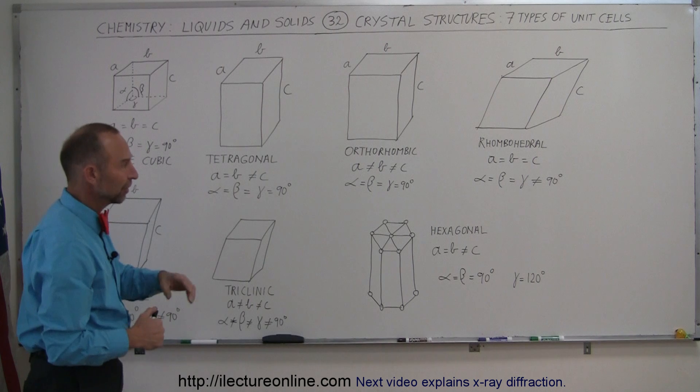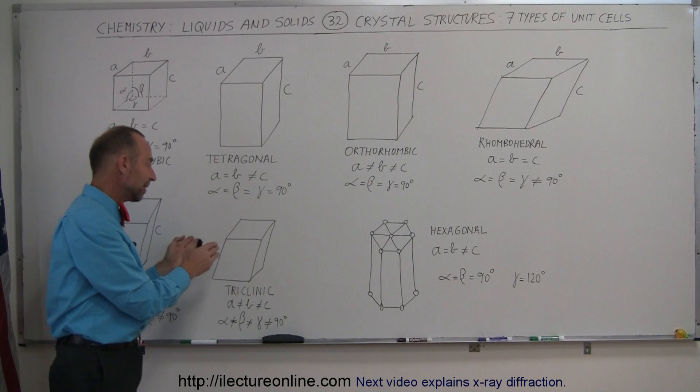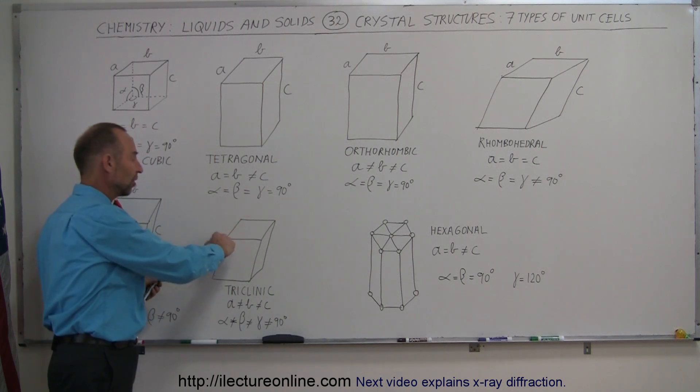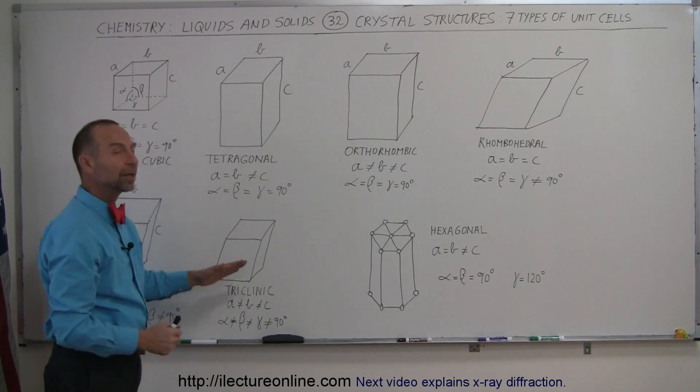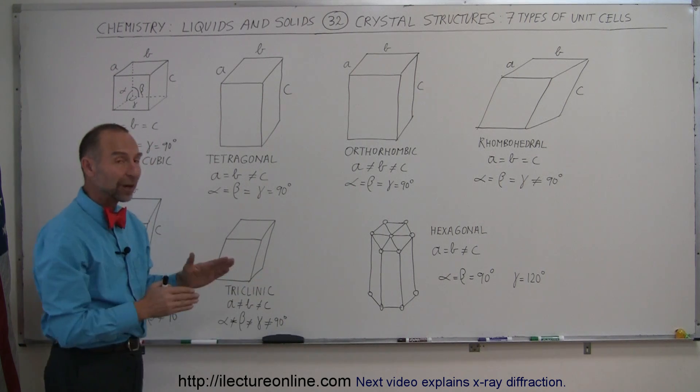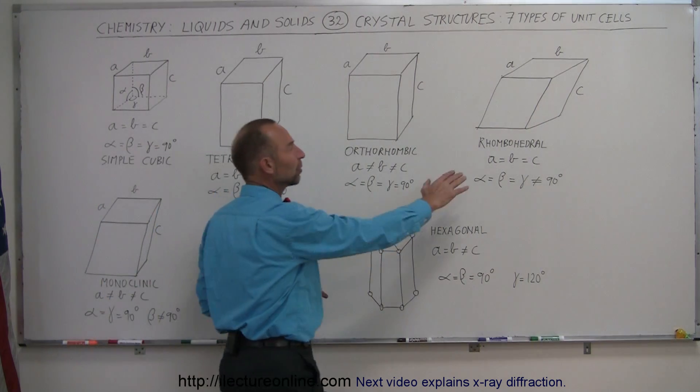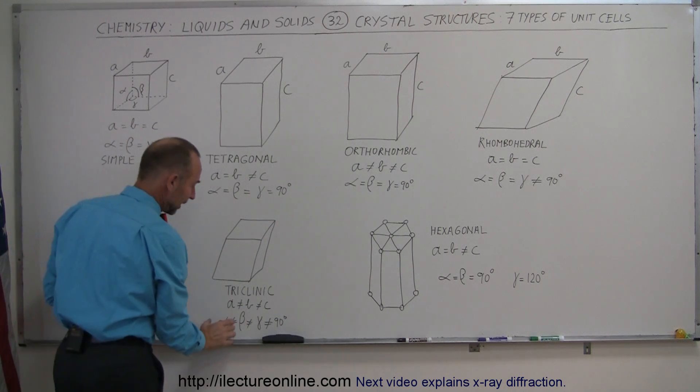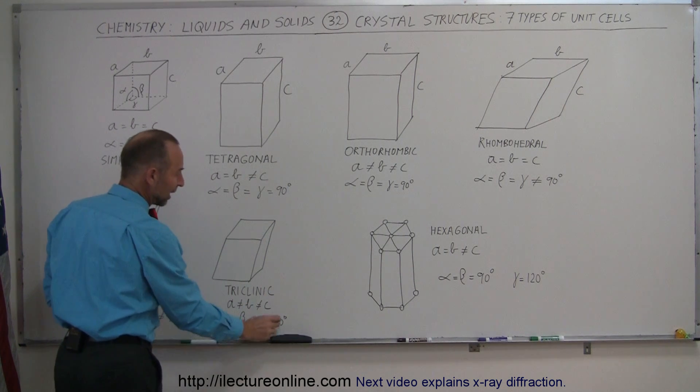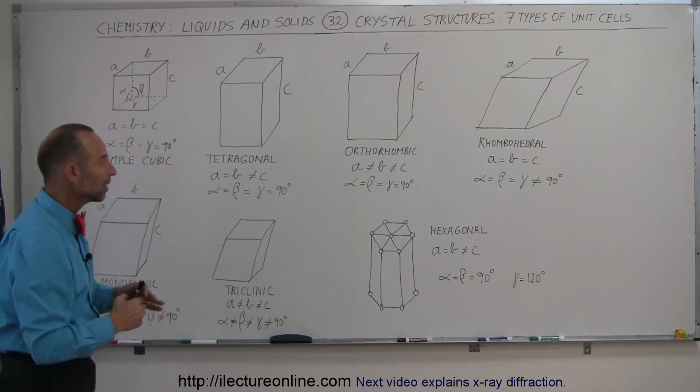Triclinic here is very similar to rhombohedral, the only difference here is that A, B, and C are not the same. So the various dimensions, depth, width, and height are not the same. And triclinic means that it's leaning in three directions, but the lean is different in every dimension, every direction. Here the lean was the same in every direction, here the lean is different in every direction, so that's why the angles are not equal to each other, and none of them are equal to 90 degrees. So it's basically leaning in the three dimensions.